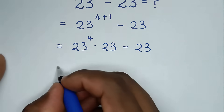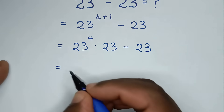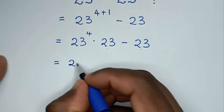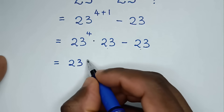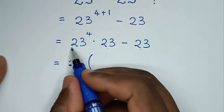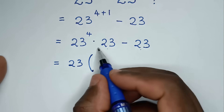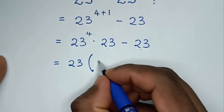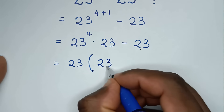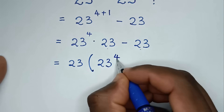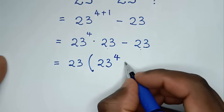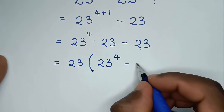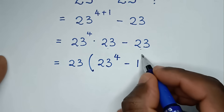Then it will be equal to — from here 23 is common, so we'll take 23 out of the bracket: 23 power 4 times 23 divided by 23 is 23 power 4, then minus 23 divided by 23 which is 1, bracket.